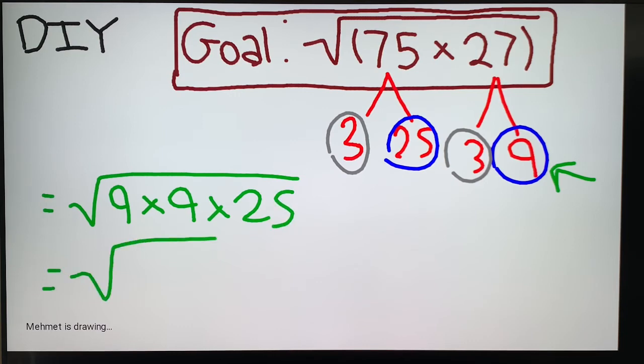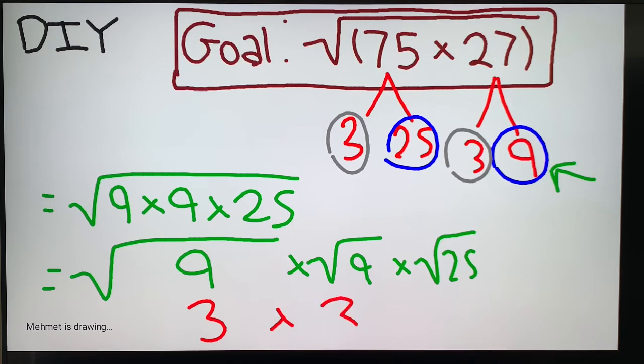And we're using our property here to break that up. Square root 9 times square root 9 times root 25. And then this is 3 times 3 times 5. 3 times 3 is 9. 9 times 5 is 45. And this is the value of this example here.